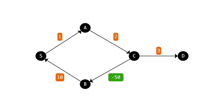Say we want to find the shortest path from S to D. A natural route goes from S to A, then A to C, then C to D, with total cost 1 + 2 + 3 = 6. But can you do better? Remember, we are allowed to repeat vertices along our journey. Pause and think about this.